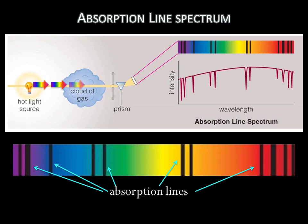The absorbed photons, therefore, don't make it into the prism. They are missing from the spectrum. Where those photons should be in the spectrum, there are dark lines.